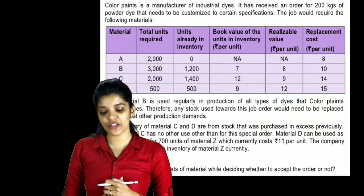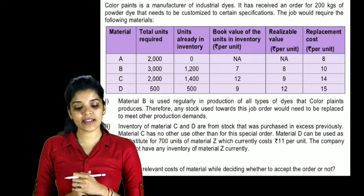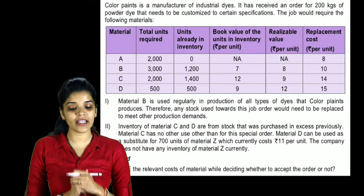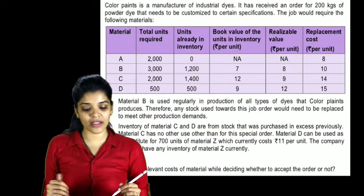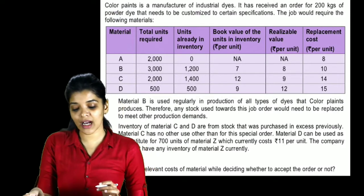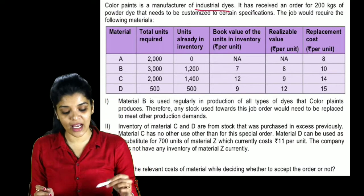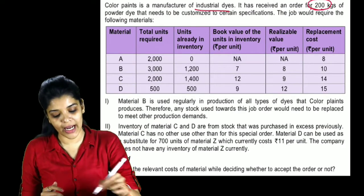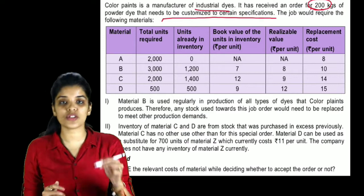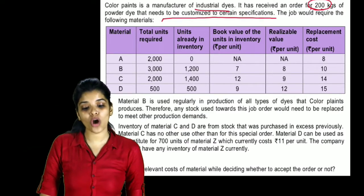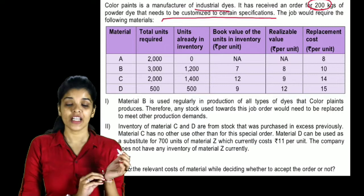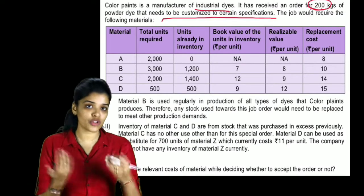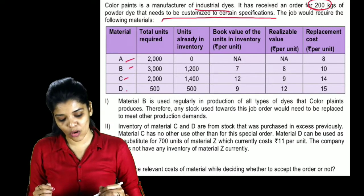Color Paints is a manufacturer of industrial dyes. It has received an order for 200 kgs of powder dye that needs to be customized to certain specifications. The job would require the following materials: A, B, C and D.